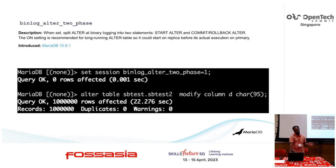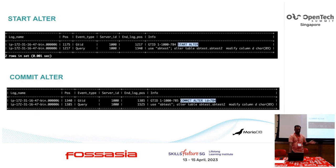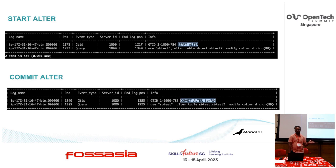Once the alter gets a lock and starts executing, immediately — for example, this is one of the events for a successful alter and commit in MariaDB — the binlog will get a start alter event, which will be sent to the replica. And on the replica, this alter will start executing without blocking the SQL threads.